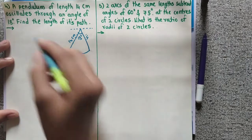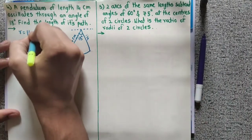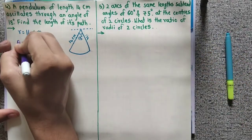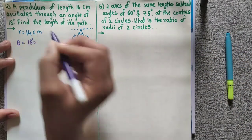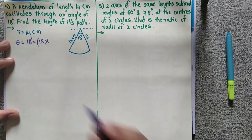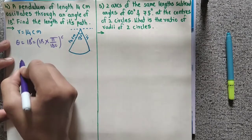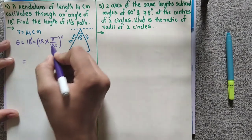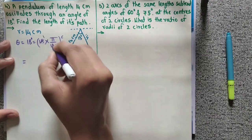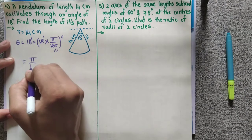So r equals 14 cm. Theta equals 18 degrees. Now we need to convert 18 degrees to radians, so we multiply by pi upon 180. Which gives pi upon 10 radian.